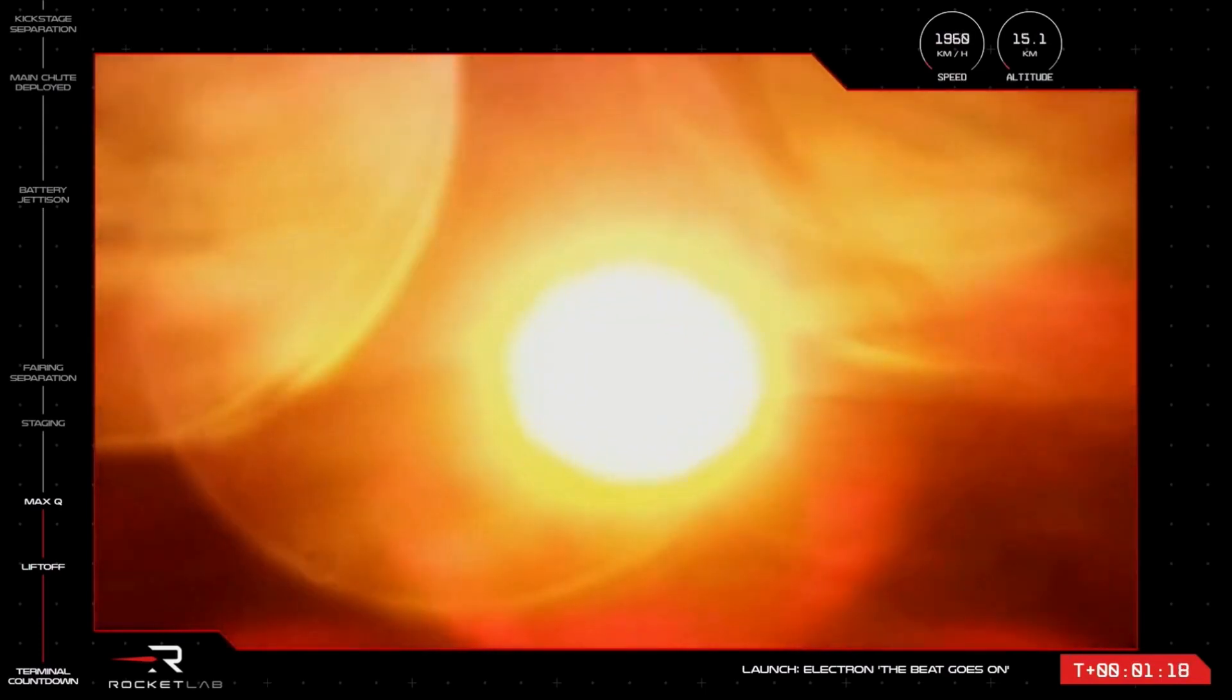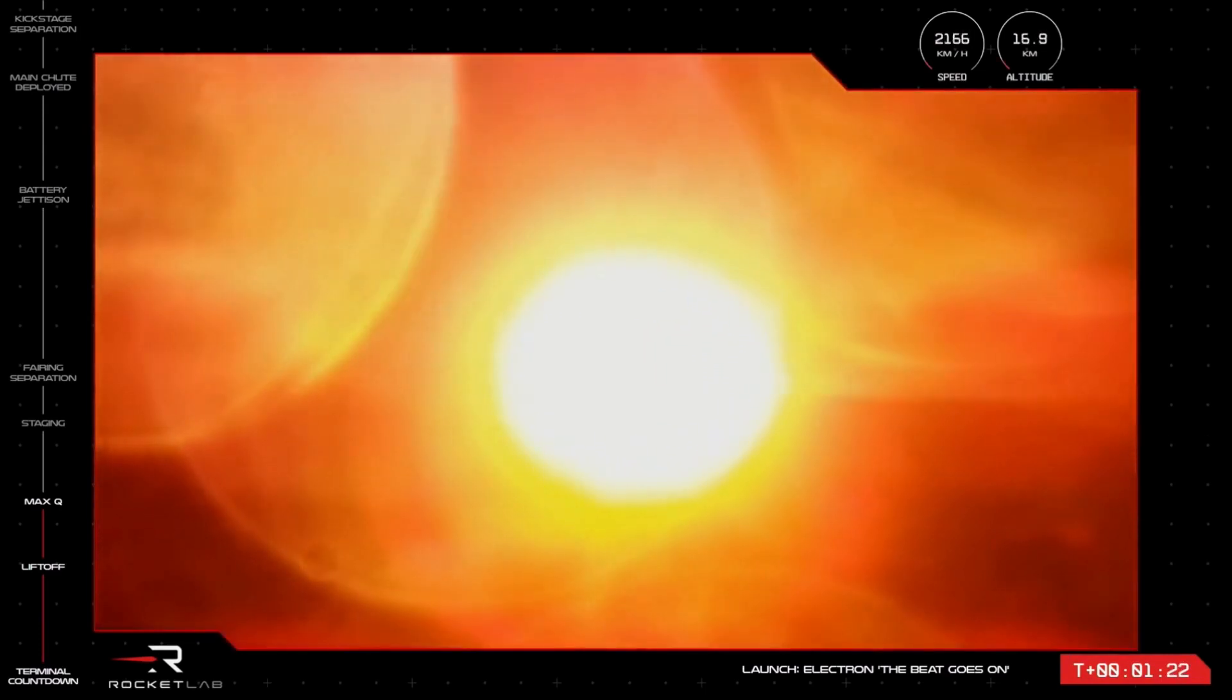There it is from Mission Control. Electron has cleared Max-Q and is now throttling back up to full noise as it continues onto space. We are currently travelling at a speed of 2,400 kilometres per hour and at an altitude of 22 kilometres as we approach the next mission milestones. Three in quick succession this time.